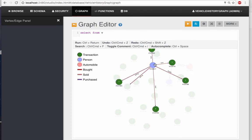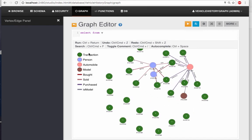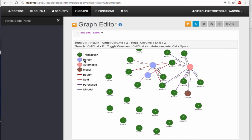By double-clicking on them, we can start to see some relationships between transactions, people, automobiles, models, and probably more things.